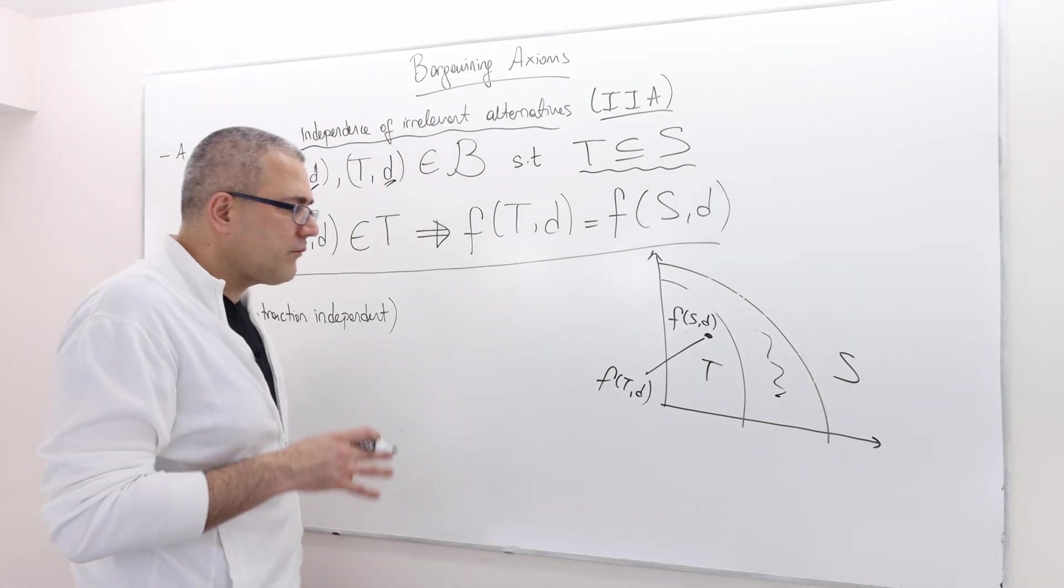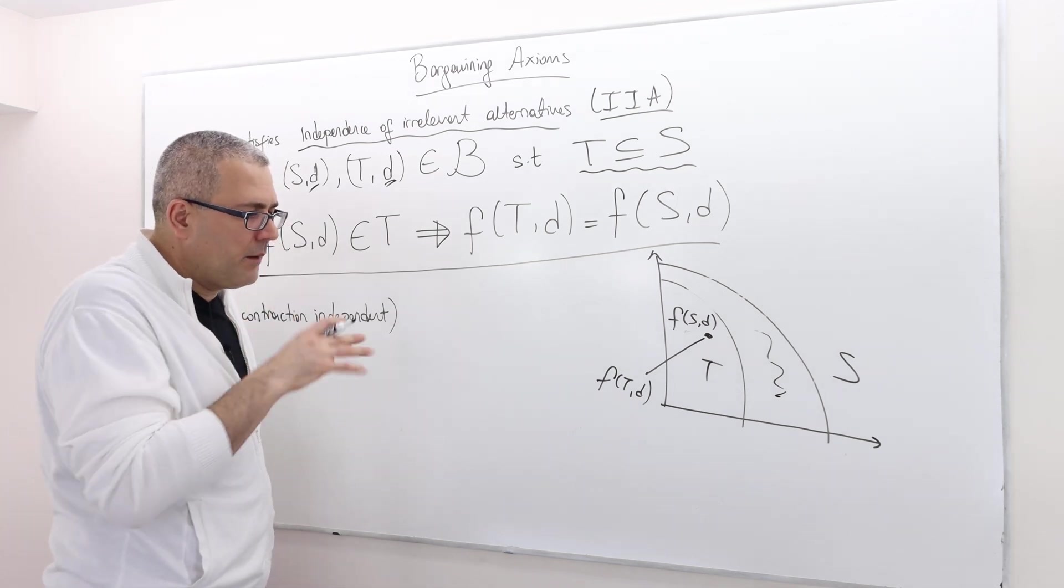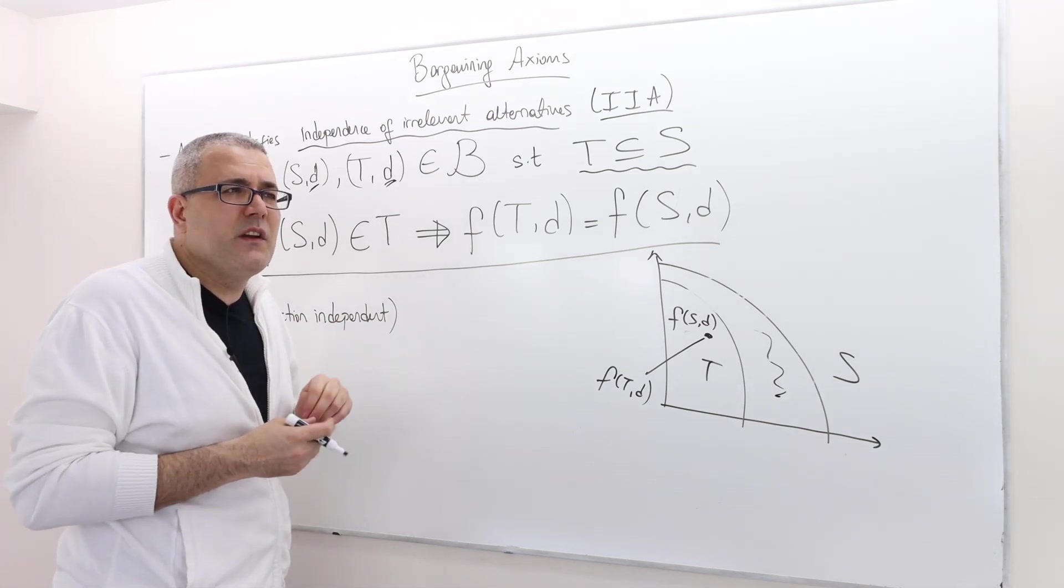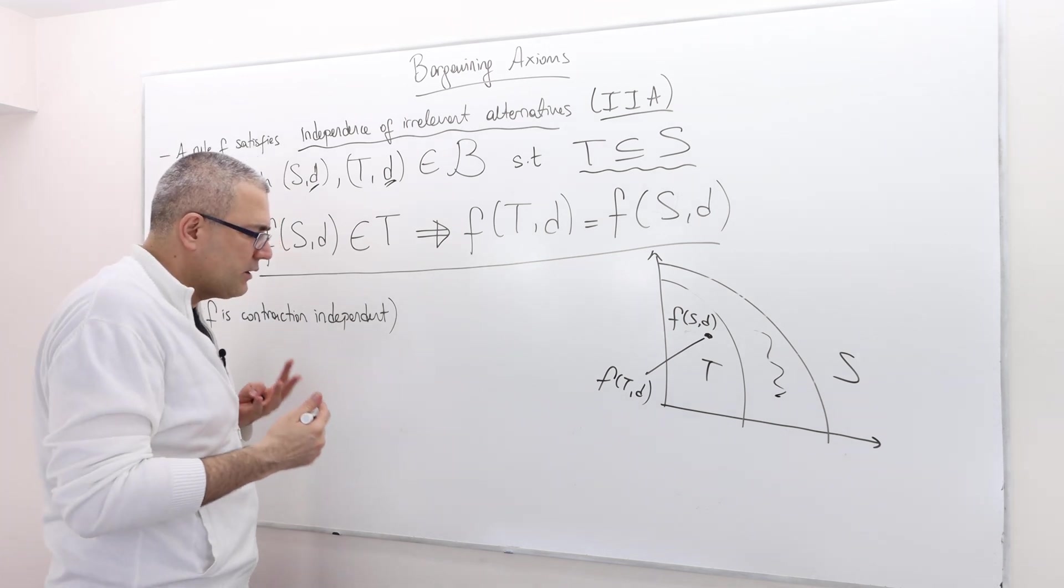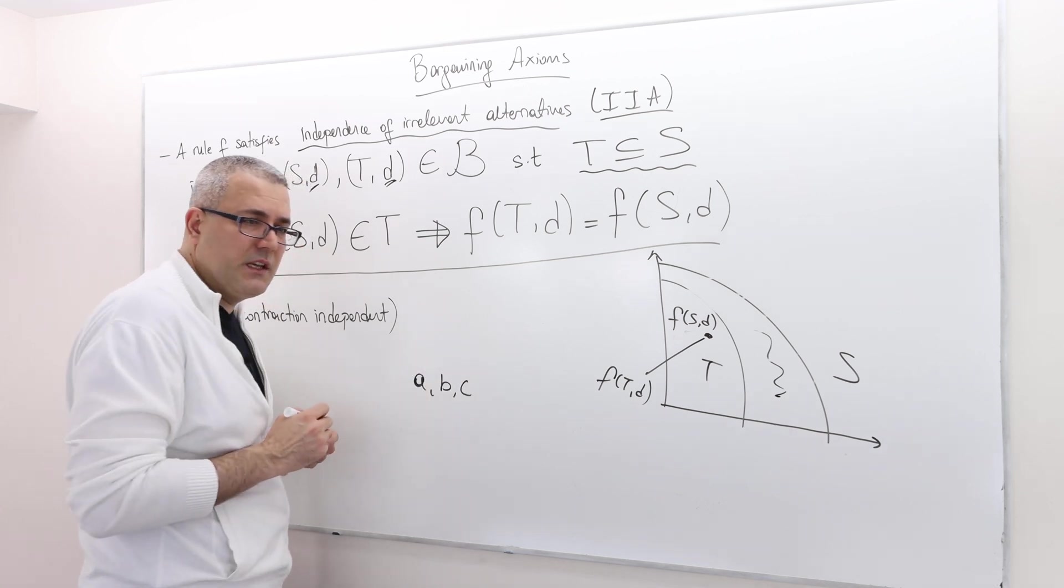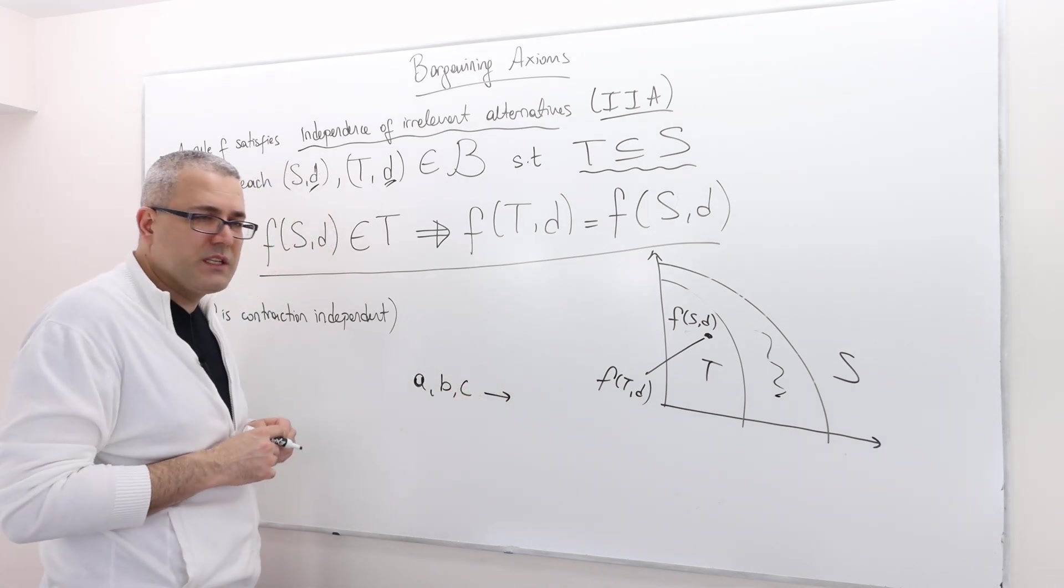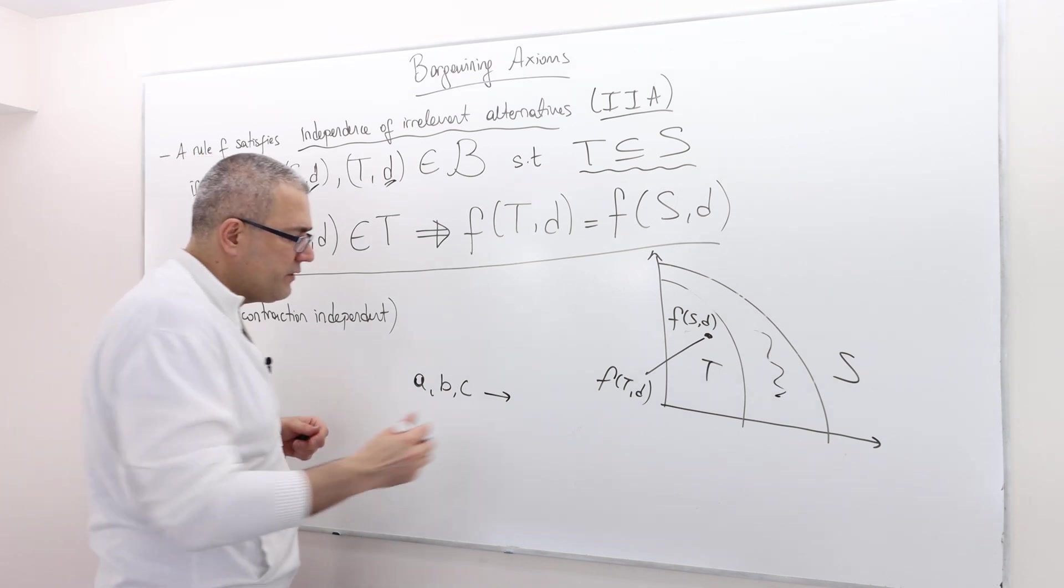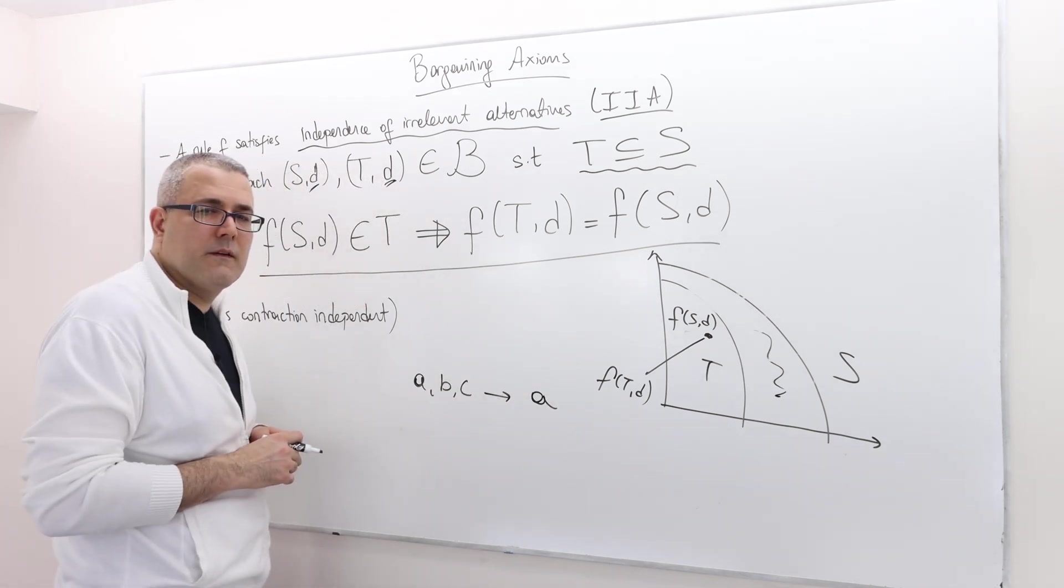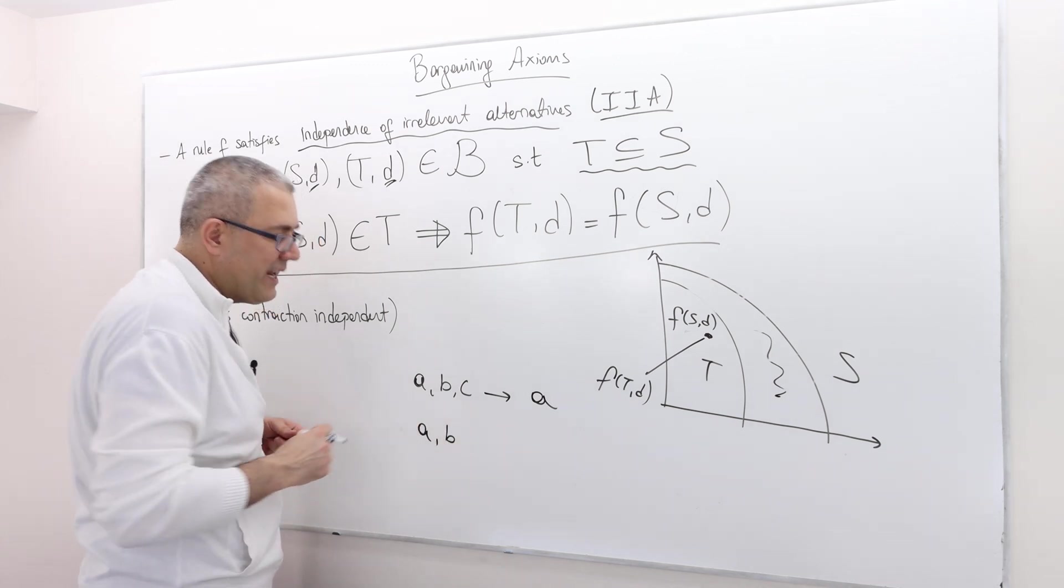We do use this sort of—remember, this is very much like a choice problem. So, let's suppose there are three alternatives, A, B, and C. And then I'm asking you to choose something. And you say, I'm going to choose A.